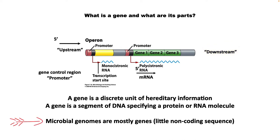Bacterial and archaeal genomes are almost all genes, with minimal non-coding sequence. However, there is more non-coding sequence in eukarya, sometimes much more. For example, the human genome is 3.3 billion nucleotides, but only about 2% of it encodes coding sequences.